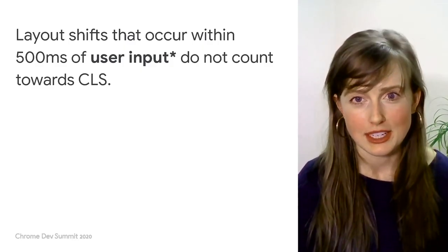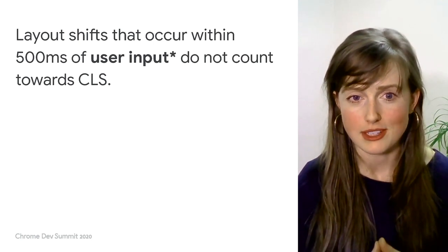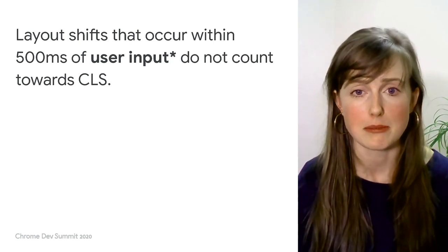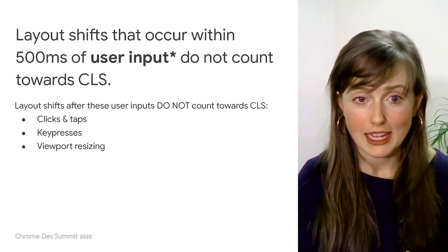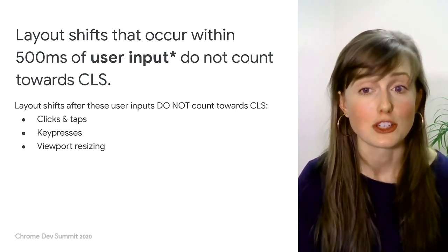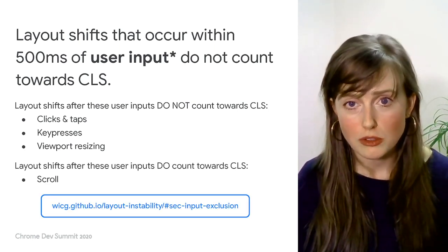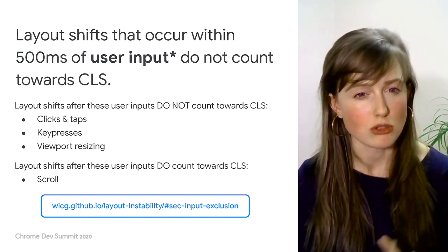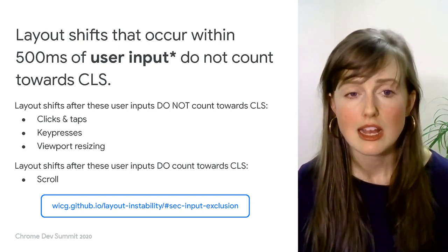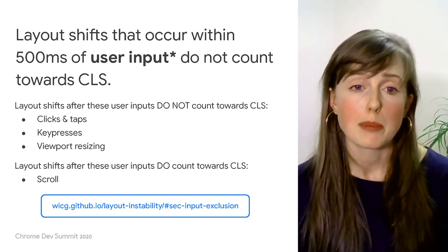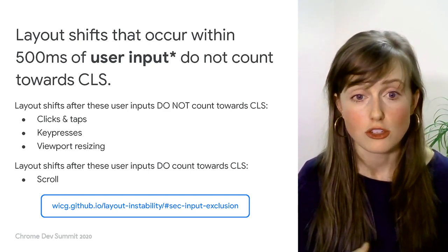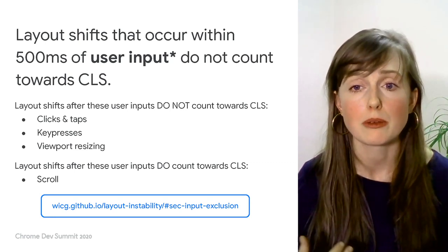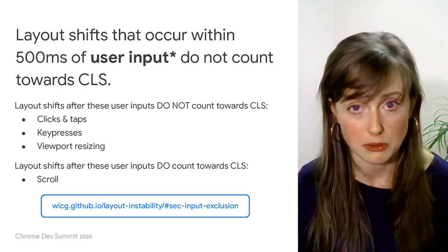Layout shifts that occur within 500 milliseconds of user input do not count towards CLS. The asterisk here, though, is that scrolling is not considered an excluded user input. If a user scrolls on a page and a layout shift occurs immediately after, it's still going to count towards CLS. The reason scrolling is treated differently is that if a user is scrolling, there's really no good reason why a layout shift should be occurring. On the other hand, when a user is clicking, it's much more likely they're trying to navigate to a new page or open a nav bar — things that can trigger layout shifts the user doesn't mind because they're trying to accomplish something.